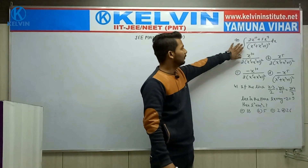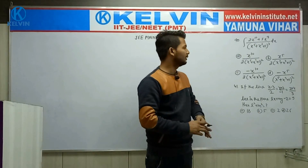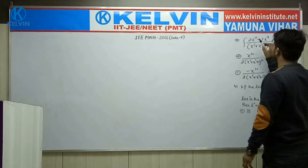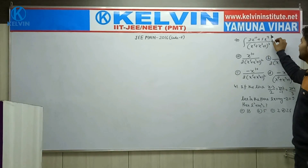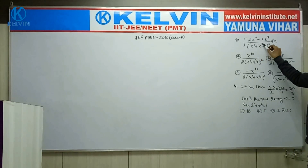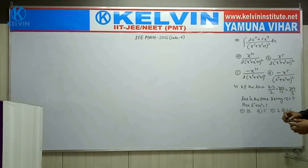Now question number 40 for entry edition. This is 2x to the power 12 plus 5x to the power 9, divided by x to the power 5 plus x to the power 2 plus 1, whole cube.